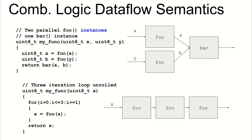Moving on to give a sense of the dataflow semantics: each time you use a function, it's a new instance of the module, and the wiring of the module depends on the C code. You can see two foo module instances with independent input data wired up in parallel, with their results coming together for a single bar module. A loop, like combinatorial logic in traditional hardware description languages, gets unrolled — giving you three instances of the foo module, with output feeding back to its input three times.